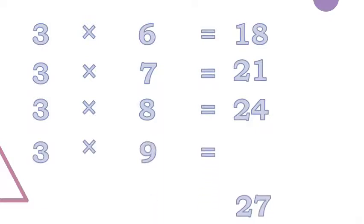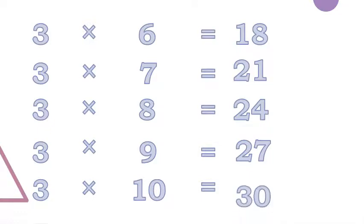Three nines are twenty-seven. Three tens are thirty. Let's revise this one again.